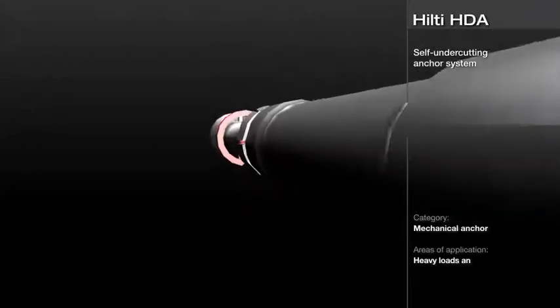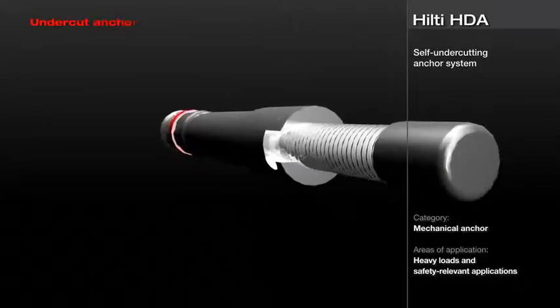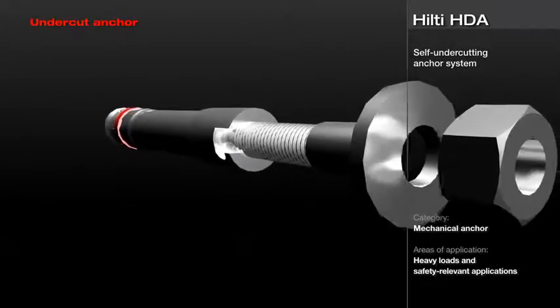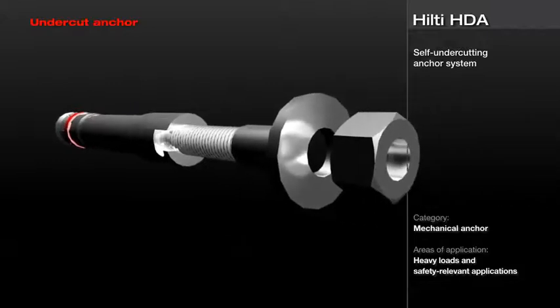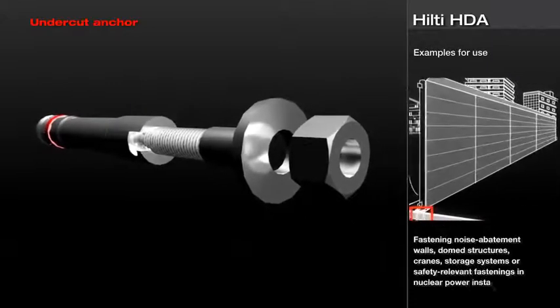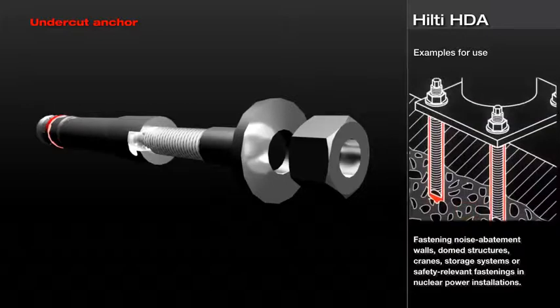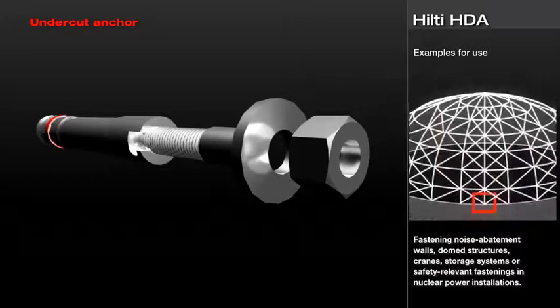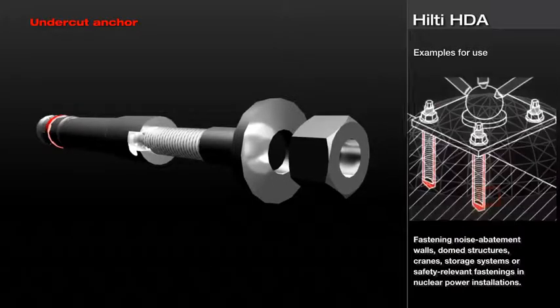The Hilti HDA is a self-undercutting anchor for the greatest ultimate loads. This undercut anchor is a bit special - it was developed by Hilti in 1997 and remains unmatched in technical prowess.